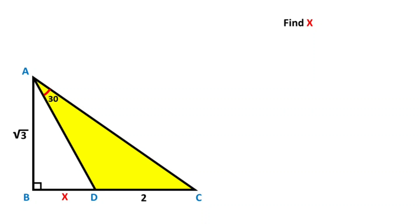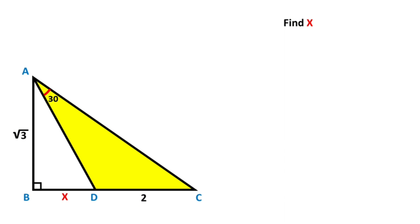Hello everyone. In this video we have one right triangle. This length is given as root 3, and here is given two. Angle DAC is given as 30 degrees, and the question is: what is the value of x?